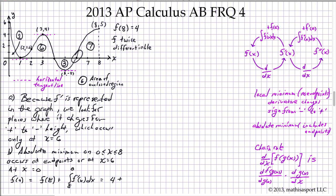So that is 4 plus, now what is the area as I go from 8 to 6? The signed area is negative 7. From 6 to 4, it is positive 3.